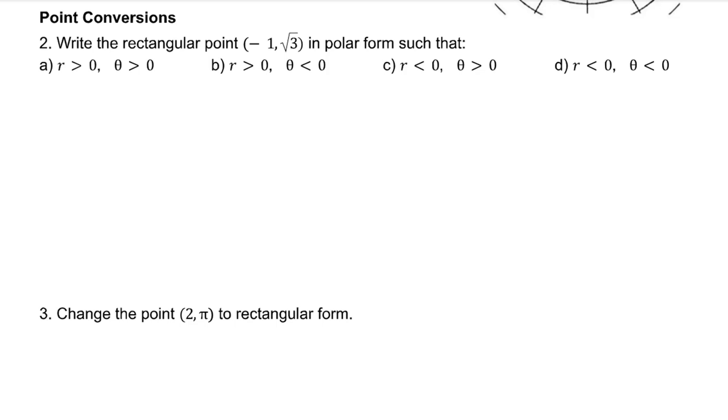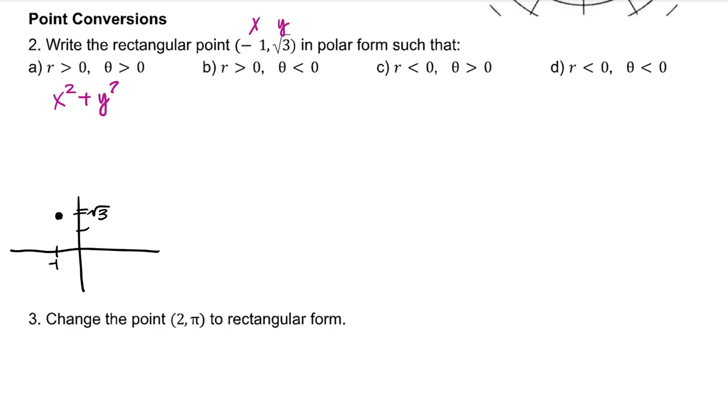For the rectangular point negative 1, root 3, we're going to write the polar form according to these conditions. To begin, I'm going to graph what this would look like. I'm going to use the relationship x squared plus y squared equals r squared. x is negative 1 and y is root 3. r is equal to plus or minus 2. So when they're looking for an r greater than 0, we'll use positive 2.